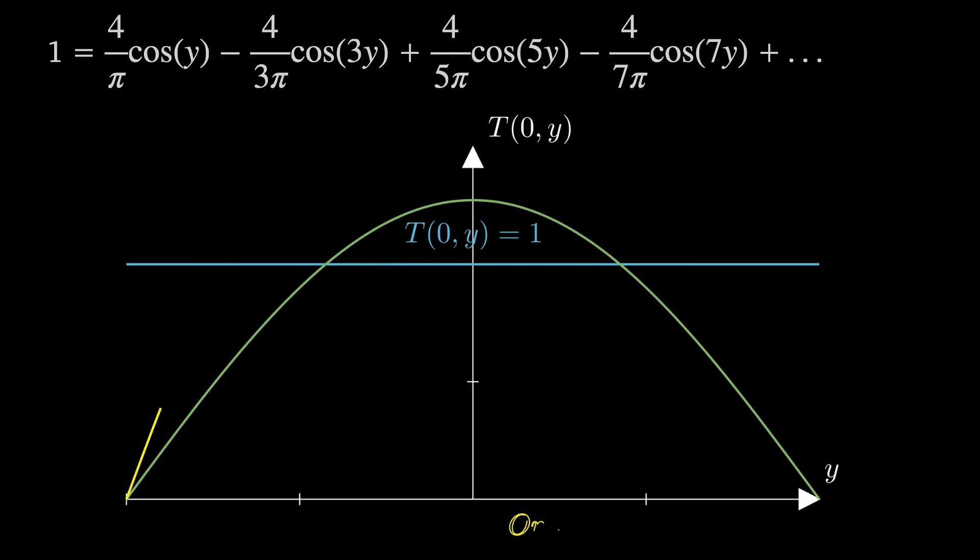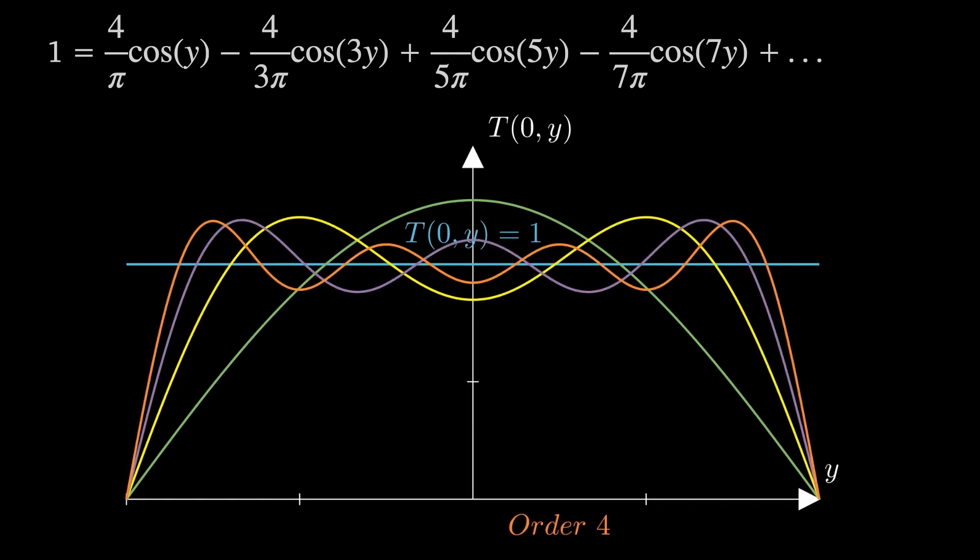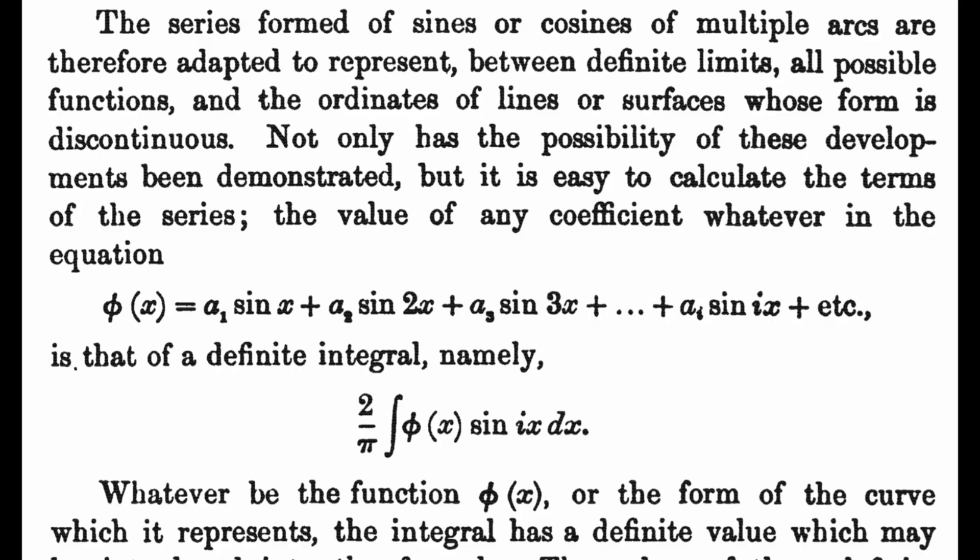Now Fourier knew this idea went way beyond just solving the heat equation. In fact when he published his book the analytical theory of heat in 1822 Fourier dedicated large sections just to the study of these trigonometric series. What he recognized was the generality of the method. He said using this approach we can find a trigonometric series expansion for all possible functions including discontinuous ones and he gives us the method of finding the coefficients. This method is of course what we now know as Fourier series.